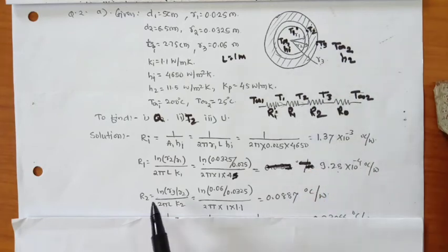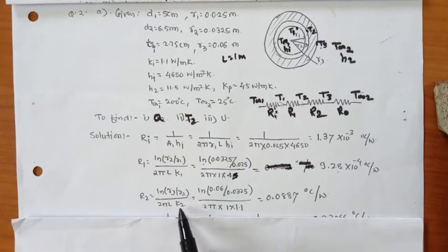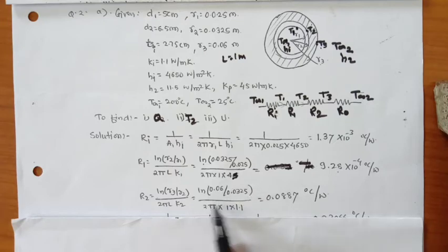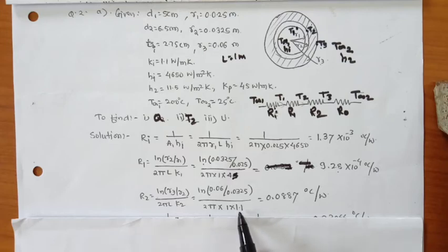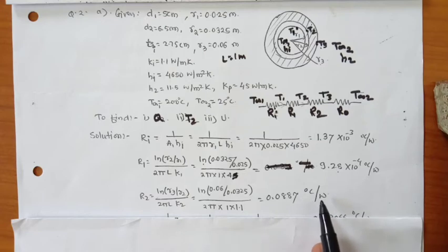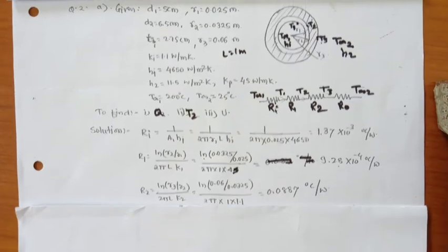Similarly, the resistance offered by the insulating material: R2 = ln(R3/R2) / (2π × L × Ki) = ln(0.06/0.0325) / (2π × 1 × 1.1). Solving this gives R2 = 0.0887 °C/W.